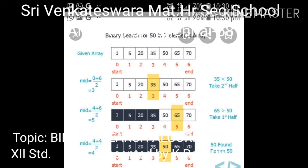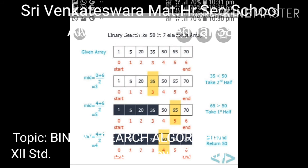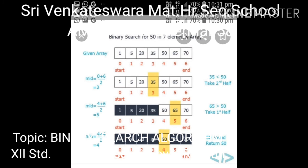It concentrates only on the remaining right part of the array. So it discards the first half and you concentrate on the next half — indices 4 to 6. Again you find the mid value: 4 plus 6 is 10, divided by 2 is 5. The index value 5 contains 65. Comparing again, 50 is less than 65, so it will now concentrate only on the left side.